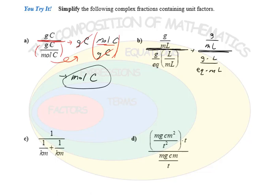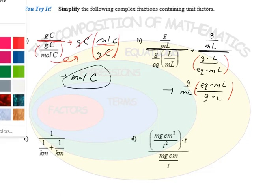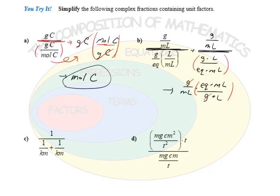Again, I'm just going to invert and multiply this. So we got the numerator, grams over milliliters, and then times the reciprocal of our denominator. So the reciprocal would be EQ times milliliters over grams times liters. So again, now once we have it as one fraction, we can cancel our unit factors. The g in the numerator can cancel with the g in the denominator. Milliliters in the denominator can cancel with milliliters in the numerator.